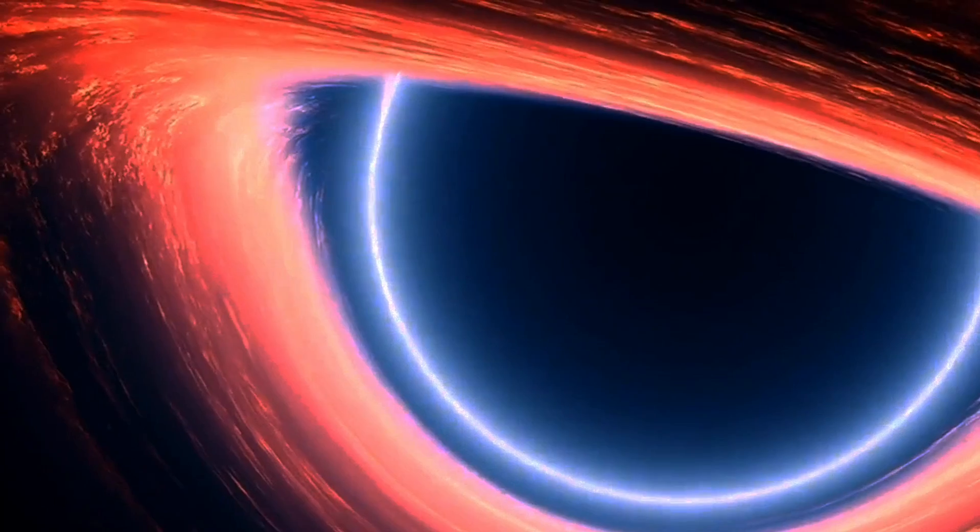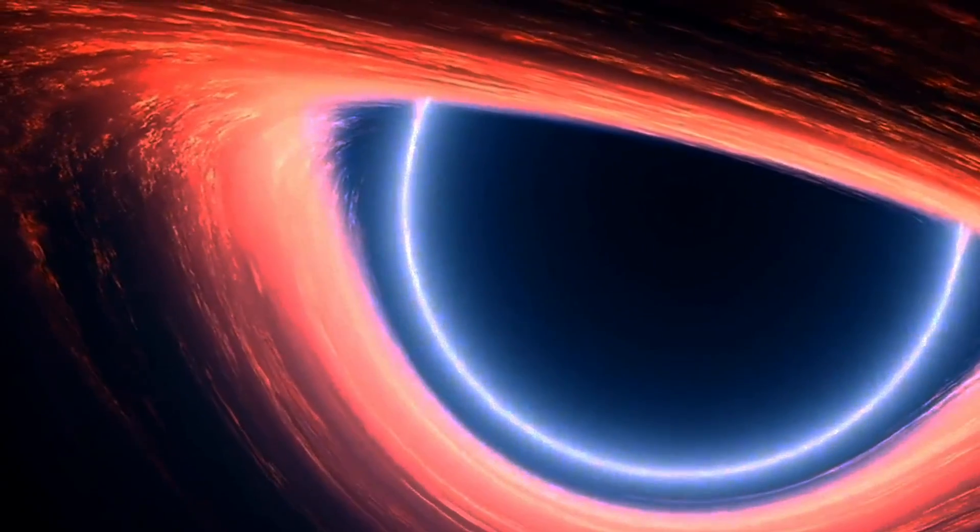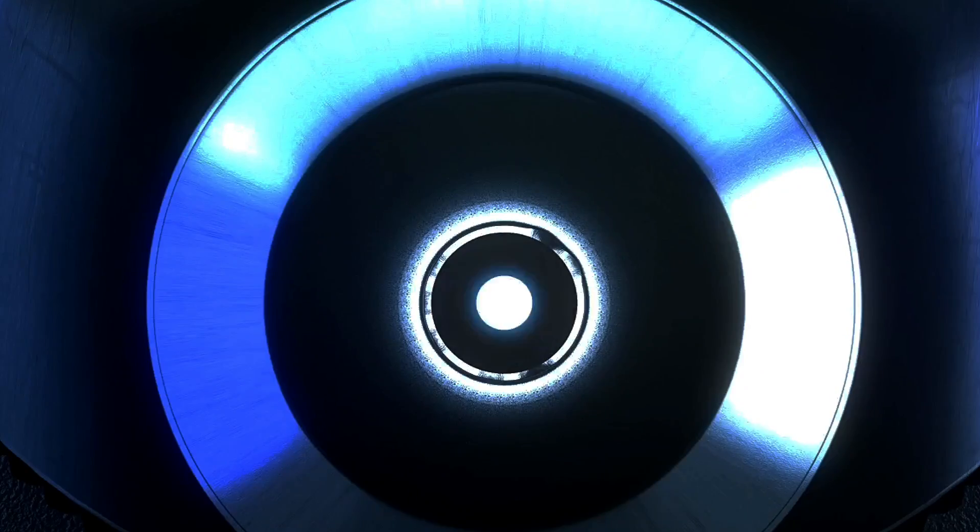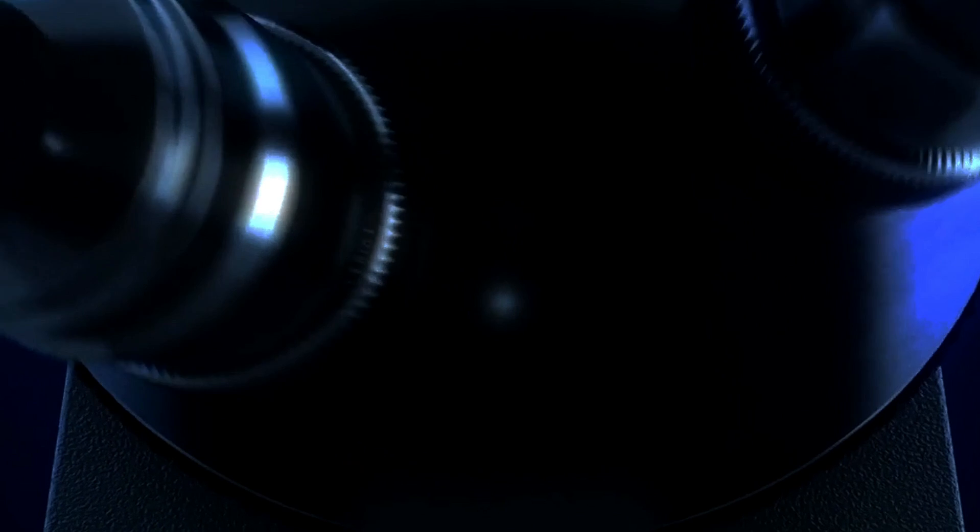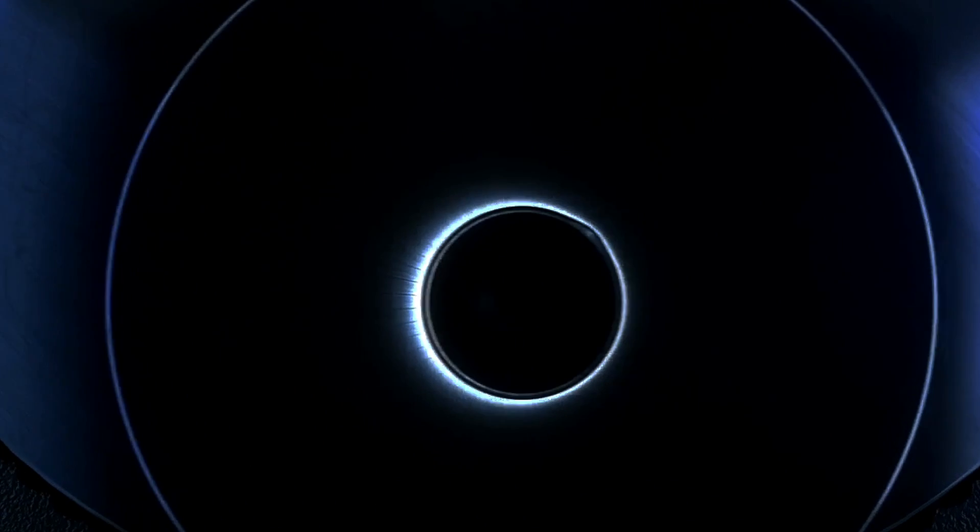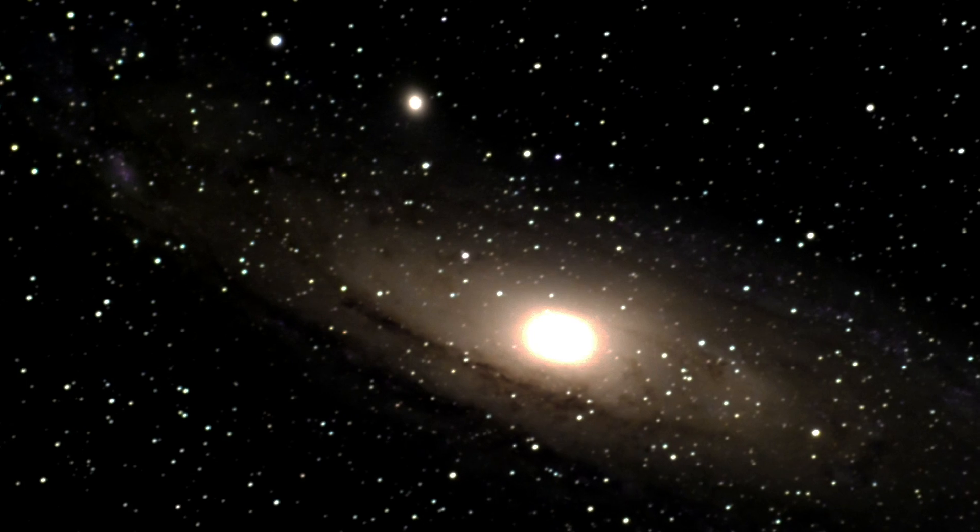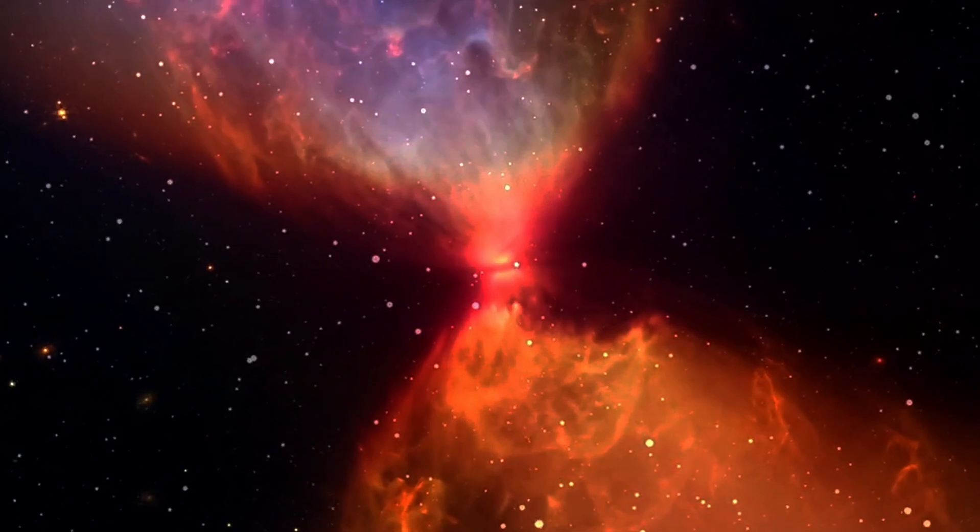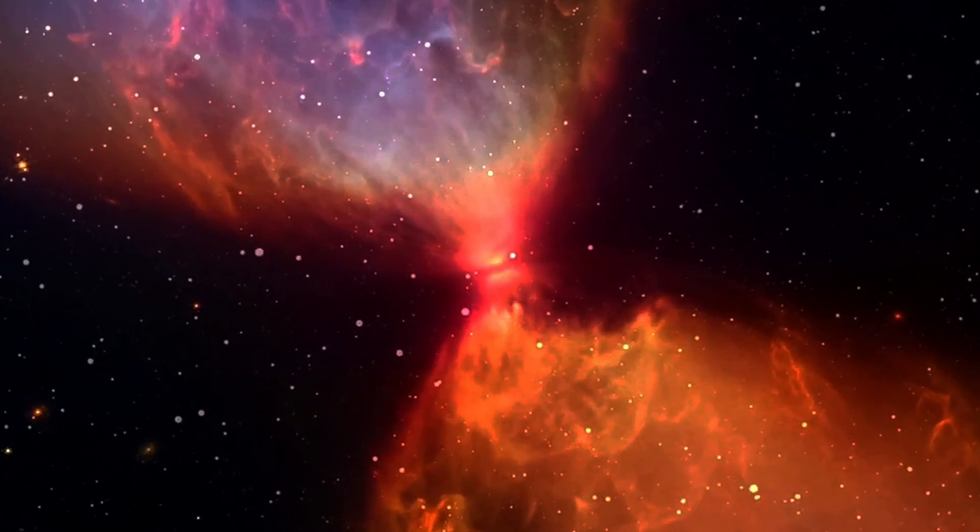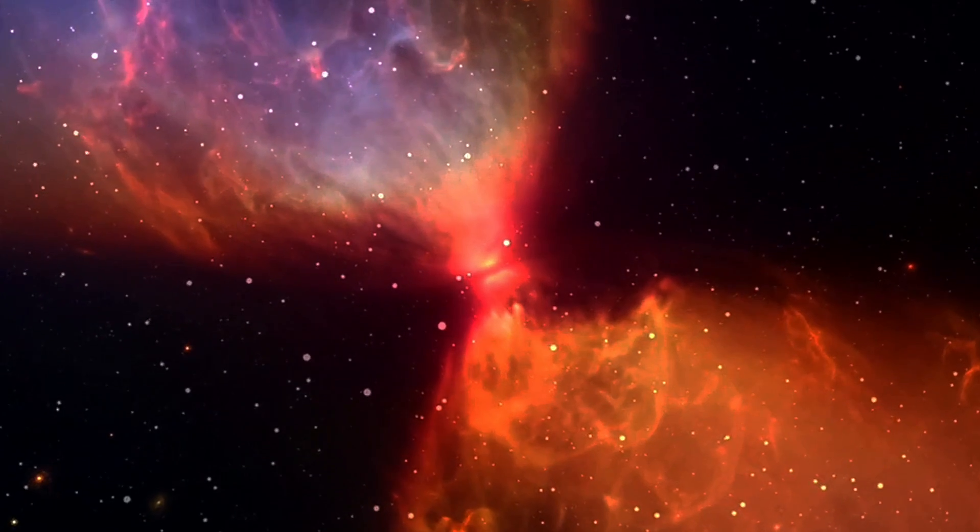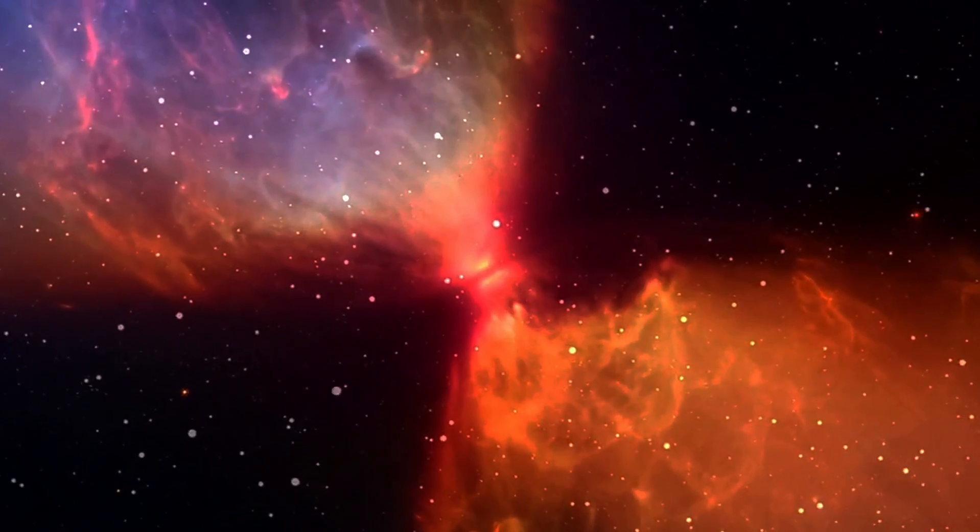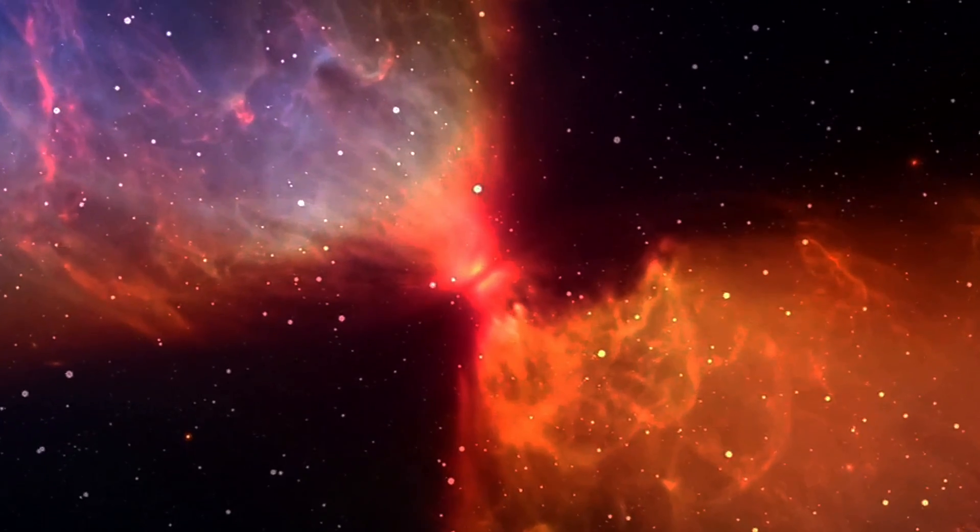Stellar black holes have much greater average densities than supermassive black holes. Imagine an object with a density comparable to the nucleus of an atom, about 10 to the power 18 kilograms per cubic meter. This is the kind of density stellar black holes possess. When an accumulation of matter reaches this nuclear density, it falls within its own Schwarzschild radius at around three solar masses, thus forming a stellar black hole.